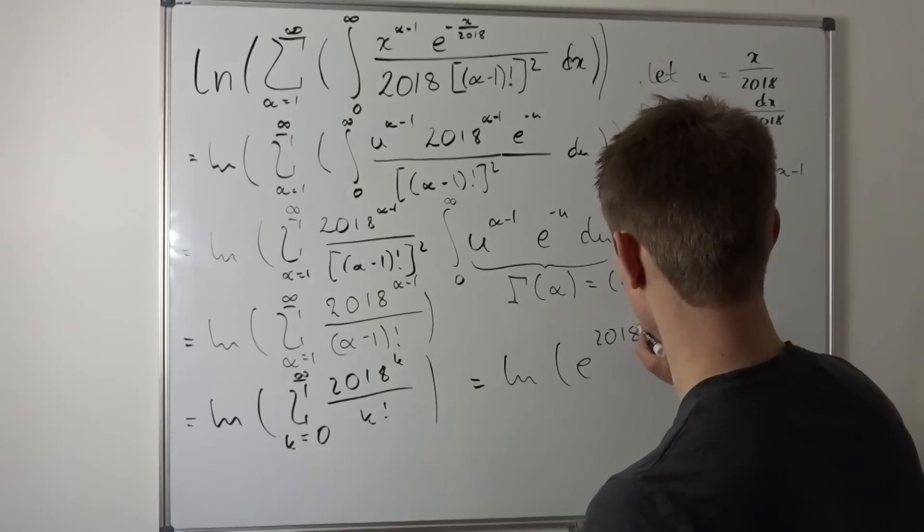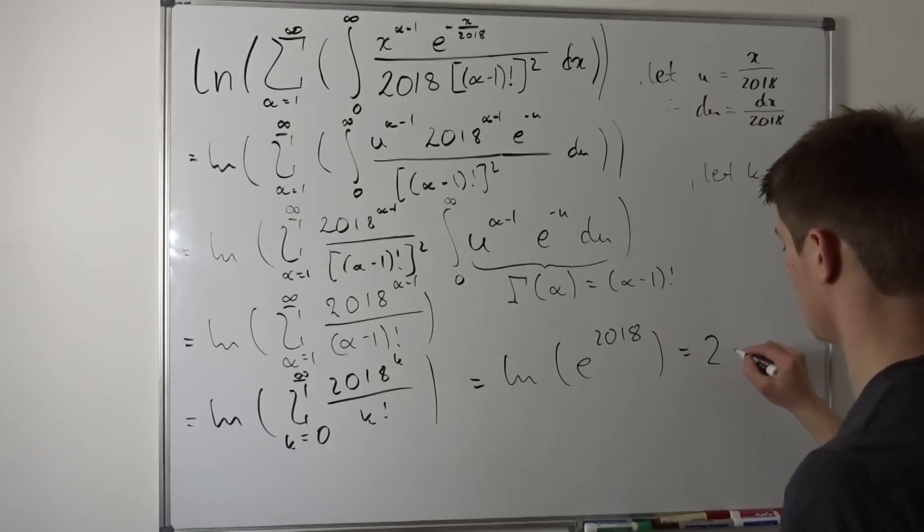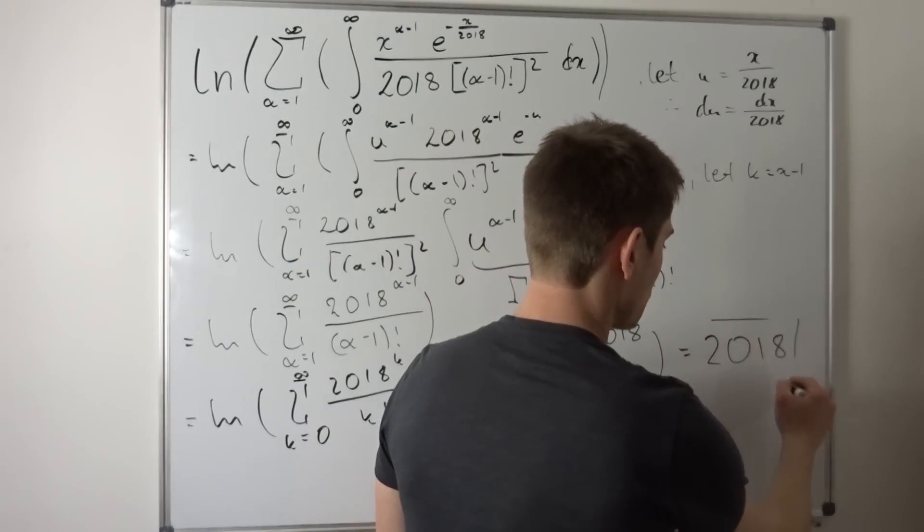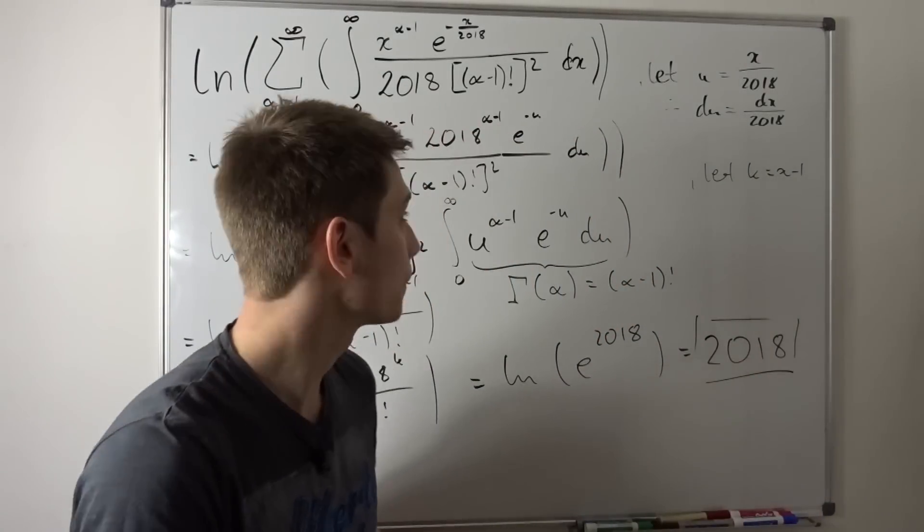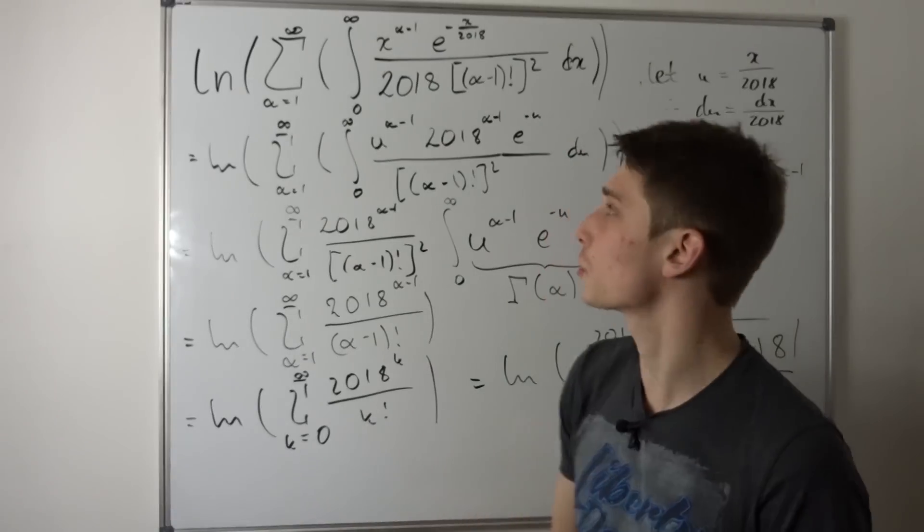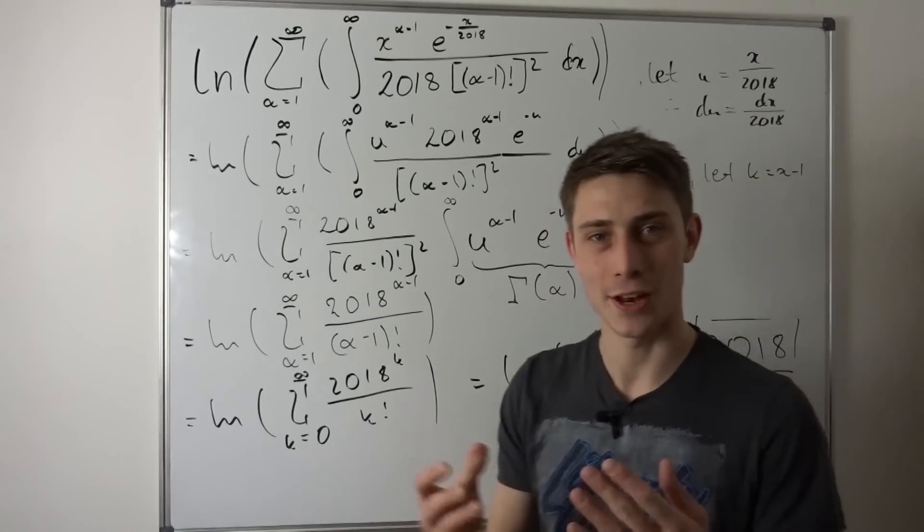And this all in all is nothing else than the natural log of e to the 2018, and this just makes 2018. And it was quite easy. So that's our solution right here. That should be right, I guess. It was really quite easy, but an interesting concept. It looks nice. It looks nice and clickbaity.